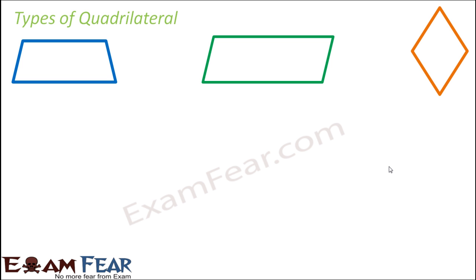There are many different types of quadrilaterals based on the values of the angles and the values of the sides — whether their sides are equal or not, parallel or not, whether their angles are equal or not. Based on that, they have been divided into so many different types.